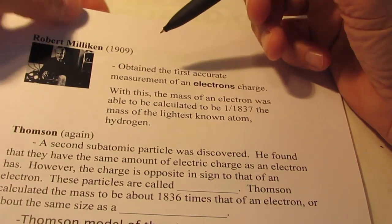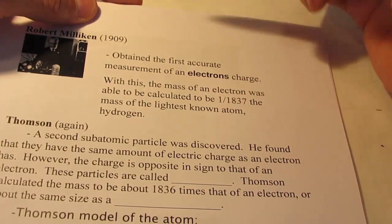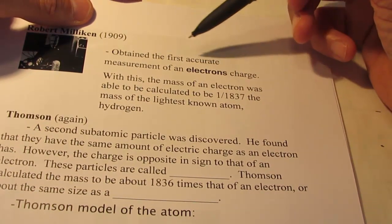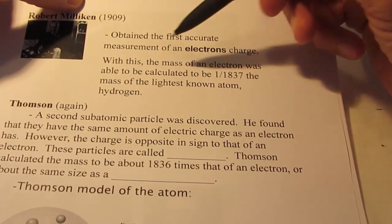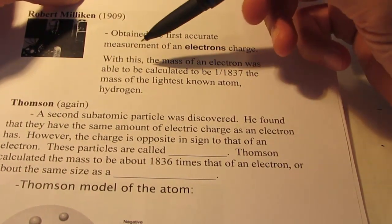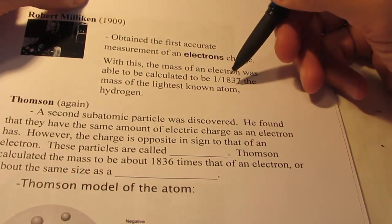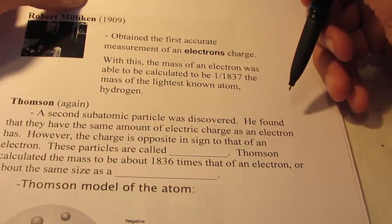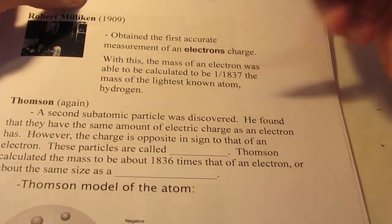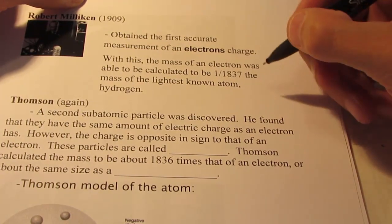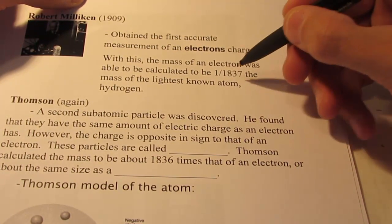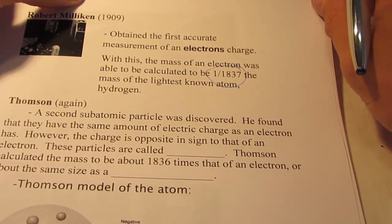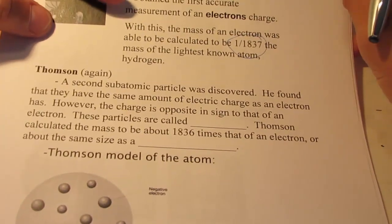1909, Robert Millikan, he's discussed in your textbook. We're not going to spend too much time with him. But he obtained the first accurate measurement of an electron's charge. With this, the mass of an electron was found to be 1/1837th the mass of the lightest known element, hydrogen. So as J.J. Thompson proposed, about 2,000 times smaller. This obviously has at least four significant figures in it.